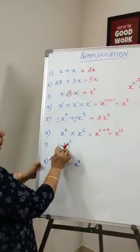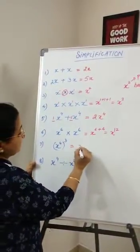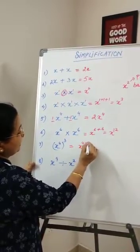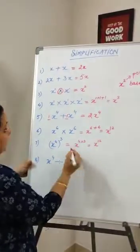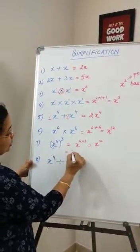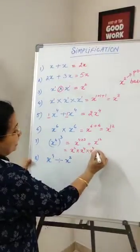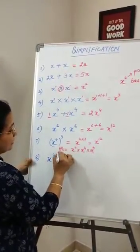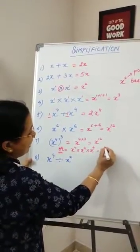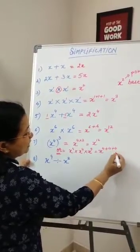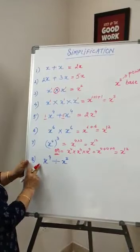x power 4 over power 3 — the answer is x power 4 multiplied by 3. So if you add the powers 4 plus 4 plus 4, the answer is x power 12.